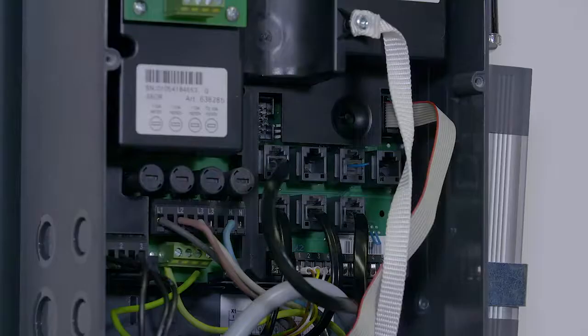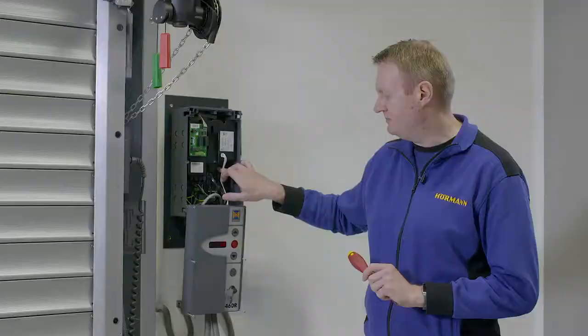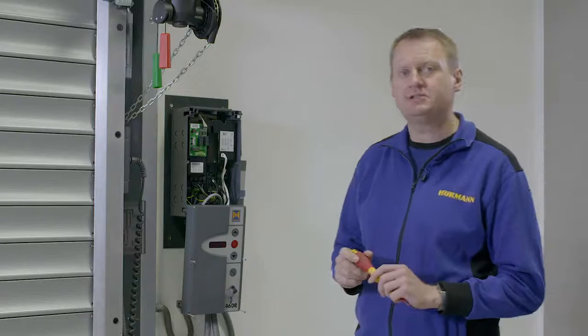When changing programs, press and hold the programming button to save all the information. If you leave the control panel for more than 30 seconds, it will time out and all changes to any information will be lost.